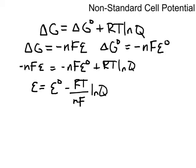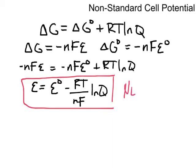And when I do that, I get E, the non-standard cell potential, equals E zero minus RT over nF times the natural log of Q. So this is going to be an important equation. So important, in fact, I'm going to go ahead and I'm going to box it.